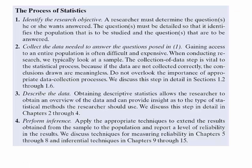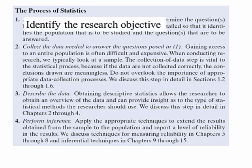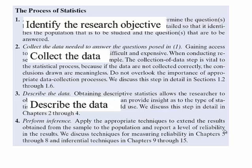Here are the four steps of the process of statistics. Number one is to identify the research objective — normally what the researcher is trying to answer. The second step is to collect the data needed to answer the question in step one, normally done using a sample since using an entire population is very difficult and expensive. The third step is to describe the data using tables, graphs, and numerical summaries. The last step, number four, is to form inference — we take the results from the sample and make inference for the population.